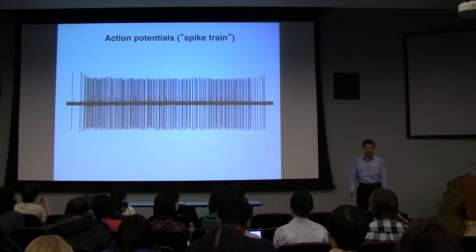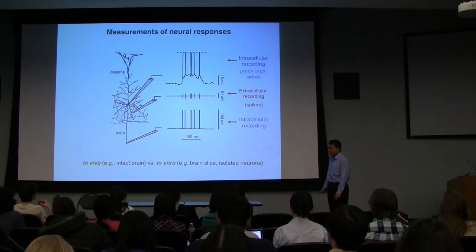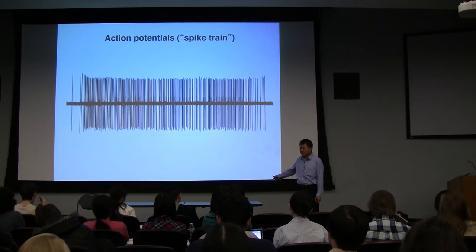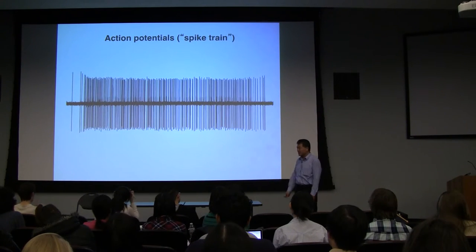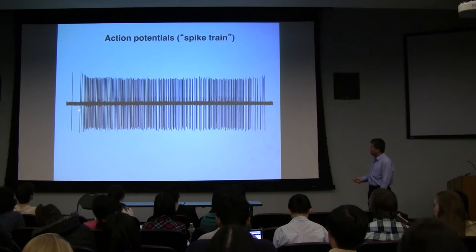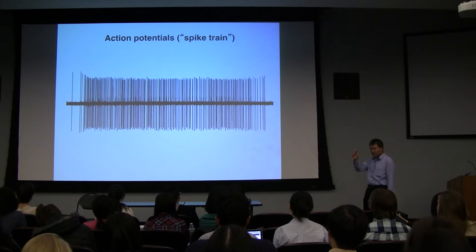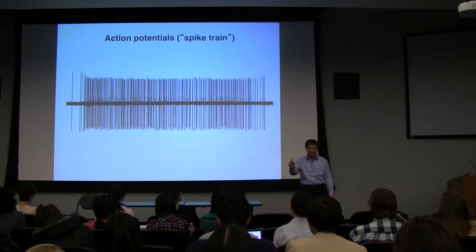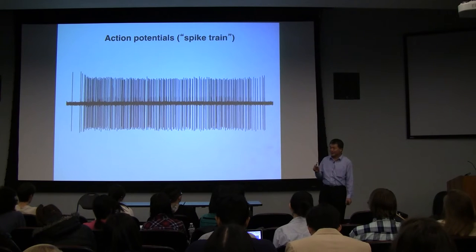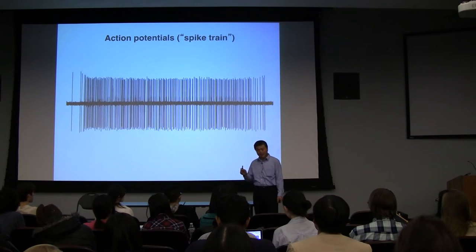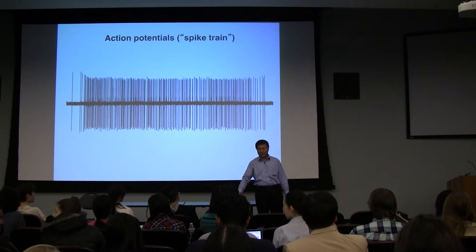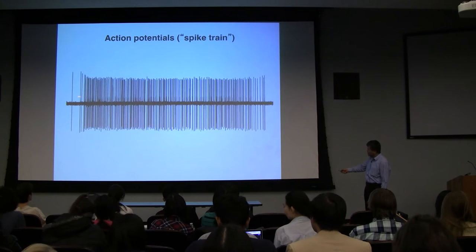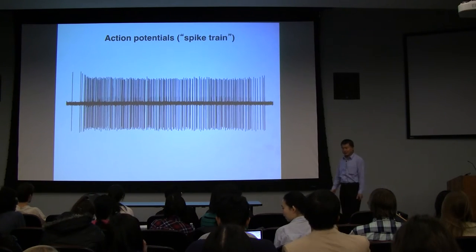What does a real action potential look like? Here's an example from a monkey brain — recorded from my laboratory. We inserted a metal tungsten electrode into the auditory cortex of marmoset monkeys. When the electrode is close enough to a cell body — like ice fishing, you lower it deep until you get a bite — you see this string of action potentials. If you enlarge it, you see the bipolar waveform familiar from textbooks.